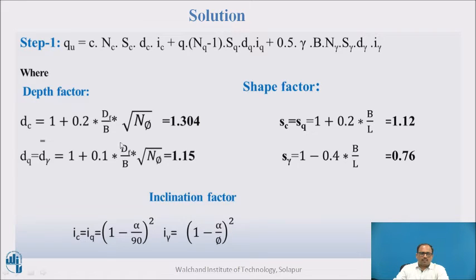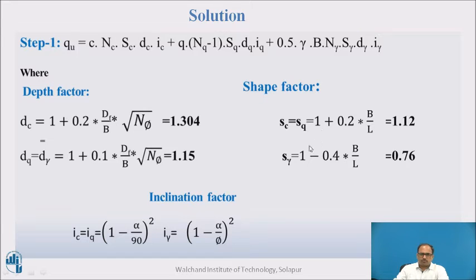Computing the values: Dc = 1.304; Dq = Dγ = 1.152. For shape factors, Sc = Sq = 1 + 0.2 × (1.8/3) = 1.12, and Sγ = 1 − 0.4 × (1.8/3) = 0.76. Inclination factors are all equal to 1.